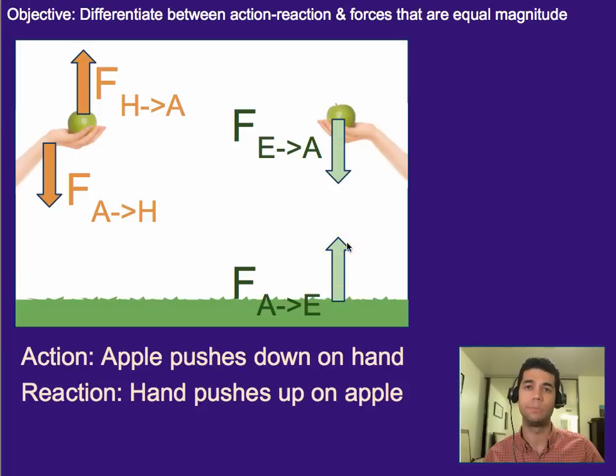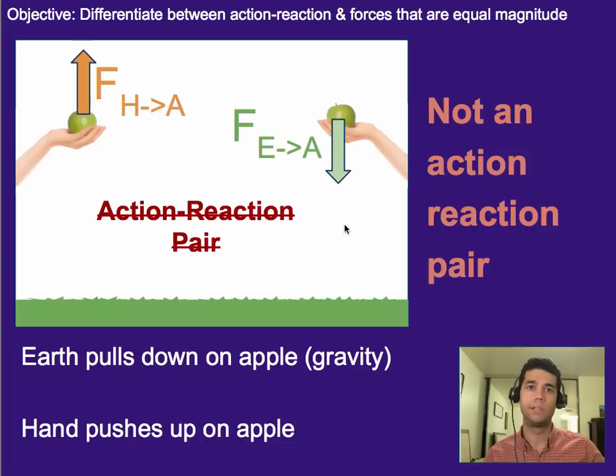So, that brings me to the main point, which is that Earth pulling down on the apple is not a reaction force to the person pushing up on the apple. Although they are very much linked, and they're the same size because weight plays a role in both of them, or weight is what causes the apple to push down on the person's hand, they're not necessarily the same thing. And they're definitely not an action-reaction pair in this case.